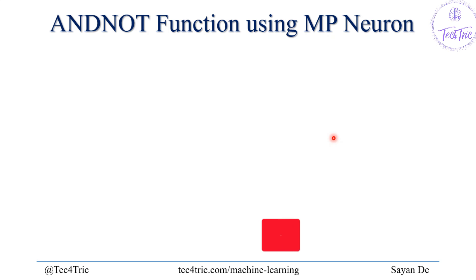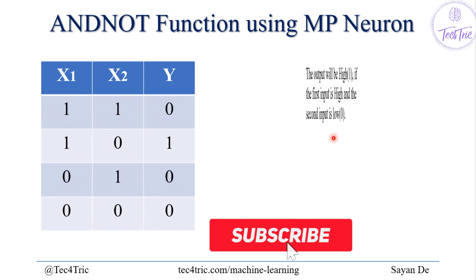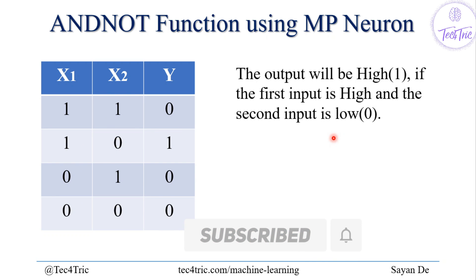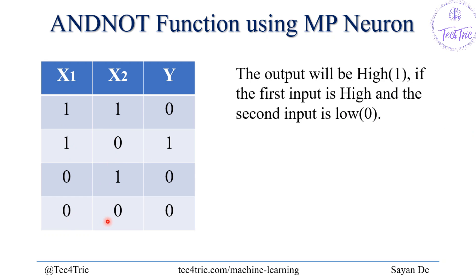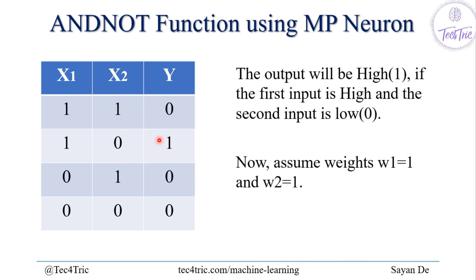First of all, we have to draw the truth table for the AND-NOT function. In the AND-NOT function, the output will be high or 1 if the first input is high and the second input is low. Here we have x1 and x2 with values 1, 1, 1, 0, 0, 1, 0, 0.